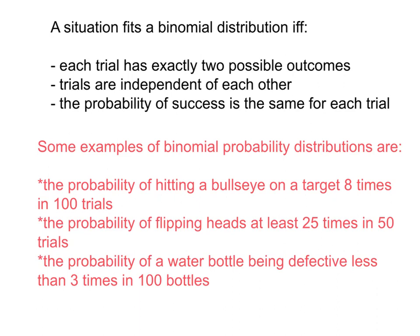Some examples of binomial probability distributions include hitting a bullseye on a target — for example, what's the probability of doing that eight times in 100 trials — or flipping heads at least 25 times in 50 trials, or the probability of something being defective, like a water bottle or battery, a certain number of times out of 100 or 150. All three are examples of binomial distributions because each trial has two outcomes, the outcomes are independent, and the probability of success is the same for each trial.